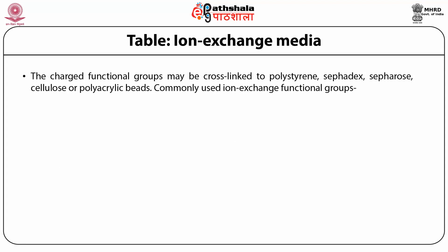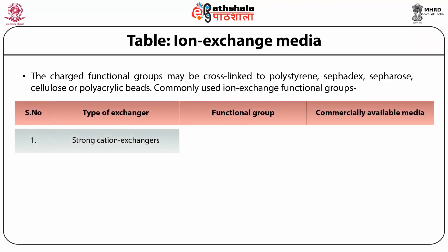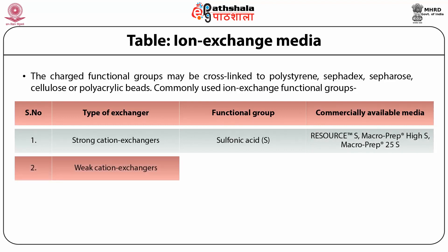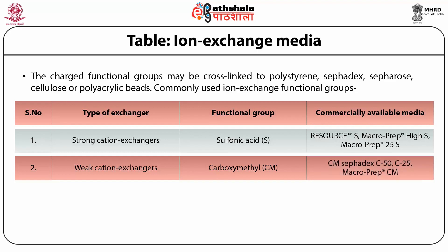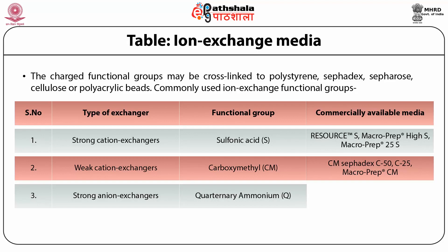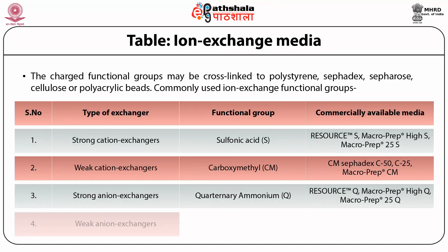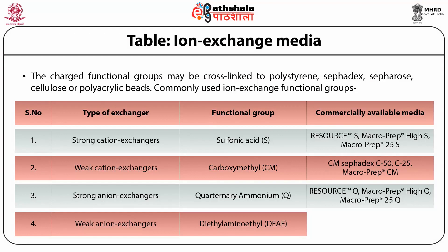Several cation and anion exchange media are available commercially. Strong cation exchangers contain sulfonic acid as a functional group, available as Macroprep. Weak cation exchangers have carboxymethyl cellulose as a functional group, available as CM Sephadex. Strong anion exchangers have quaternary ammonium functional groups, available as Resource Q, Macroprep Q, and Macroprep 25Q. Weak anion exchangers have DEAE (diethylaminoethyl) functional groups, available as DEAE cellulose A50 or Macroprep DEAE.